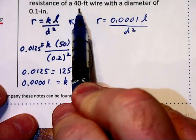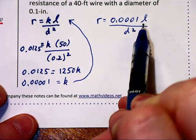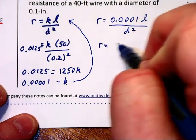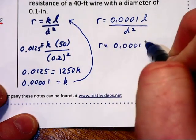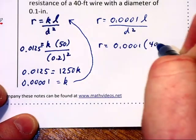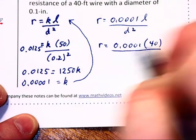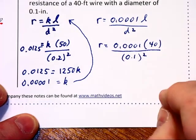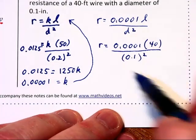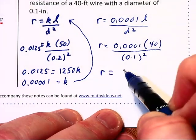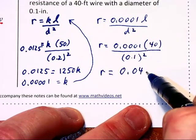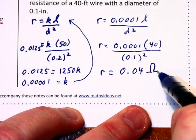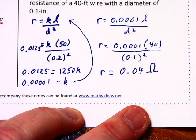Now, find the resistance when 40 feet of wire, okay, R equals 0.0001 times 40 feet with a diameter of 0.1 getting squared. We do that out in our calculator, and we find out that R is equal to 0.04 ohms, which is denoted with the omega symbol.